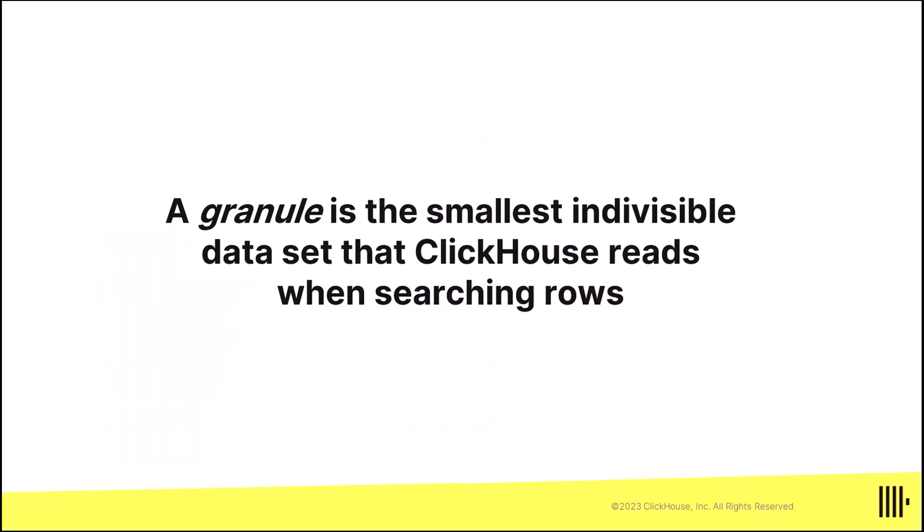What's interesting about the granule is that's the smallest amount of data that ClickHouse processes. If you search for even a single row, it'll still process an entire granule. Now it's ridiculously fast, so it's not a big deal to search for one row. Just keep in mind that picking a good primary key helps you skip granules in your queries.